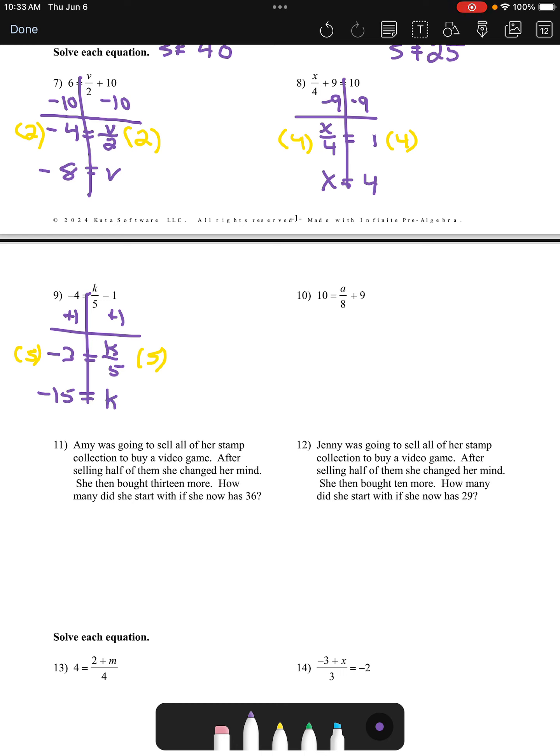Now we can get the k alone by multiplying both sides by 5. We're going to get negative 15 is equal to k.